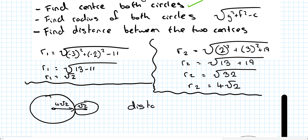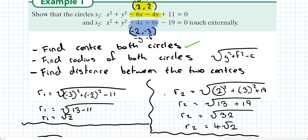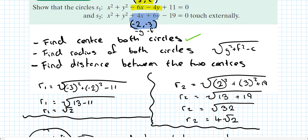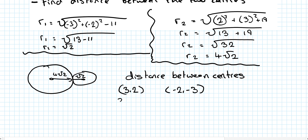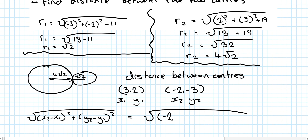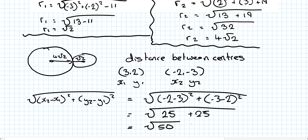So let's find the distance between centers. We have x1, y1 and x2, y2 coming from the centers of the circles - that's 3, 2 and minus 2, minus 3. Using the distance formula: x2 minus x1 squared plus y2 minus y1 squared. That gives us minus 2 minus 3 squared plus minus 3 minus 2 squared, which is 25 plus 25. The square root of 50 is 5 root 2.